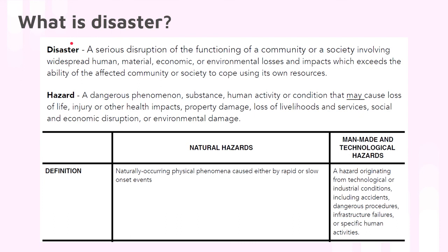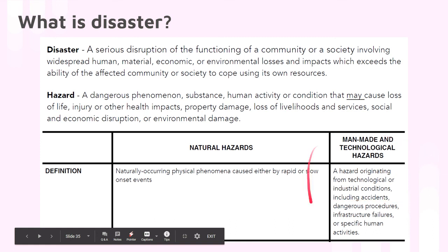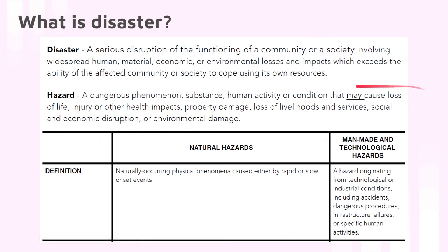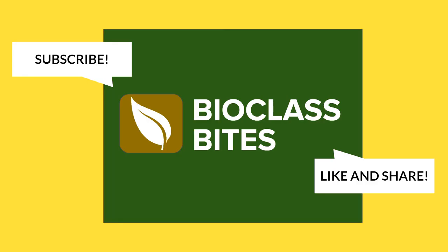I hope we have clarified what a disaster is, the factors that affect it, and what disaster risk means. A disaster is a serious disruption of the functioning of a community — including human, material, economic, and environmental losses — that exceeds the ability of the community to cope on their own. In the next video, we will talk about hazards: natural hazards such as naturally occurring phenomena, and man-made and technological hazards such as accidents or infrastructure failures. A hazard is defined as a dangerous phenomenon, human activity, or condition that may cause loss of lives and others. Don't forget to subscribe to my channel and like and share this video. Till next time, goodbye.